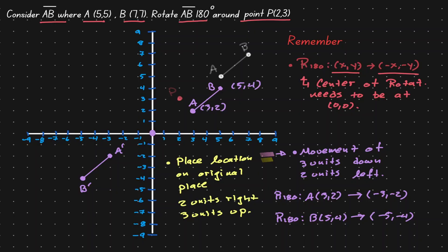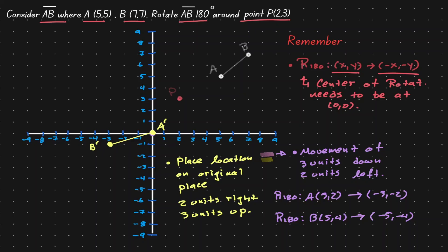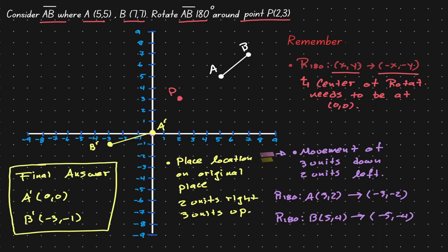Now let's take our location for A' and move it 3 units to the right and 2 units up, giving us its final location. Let's do the same for B' — move it 2 units to the right and 3 units up — giving us the final location. Let's erase the purple marks and put the original information back. We moved the whole problem so the center of rotation was at the origin, applied the rotation rule, then put the problem back.